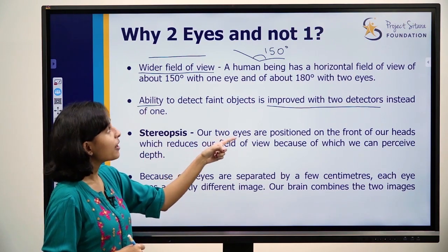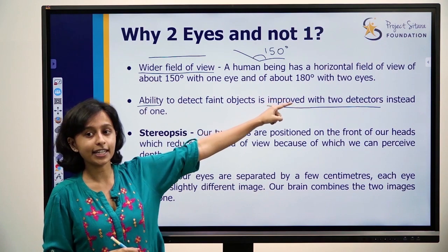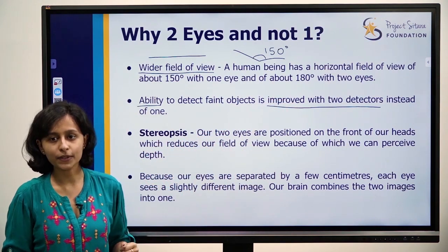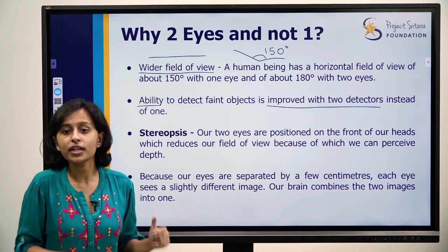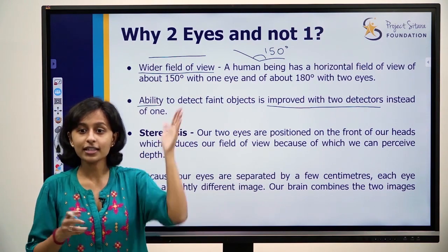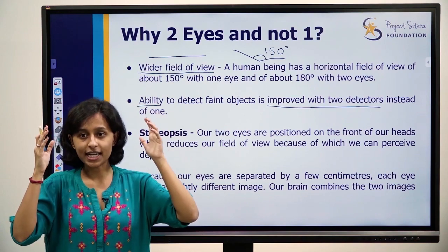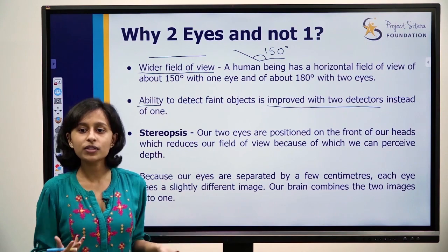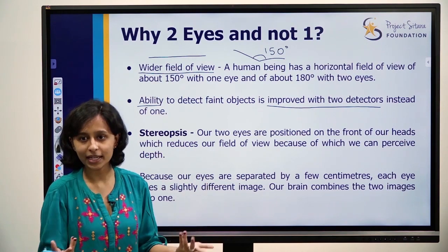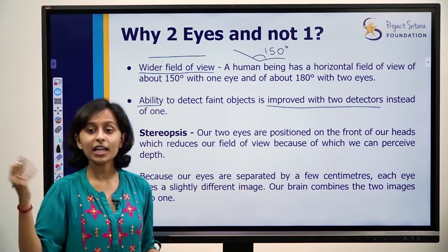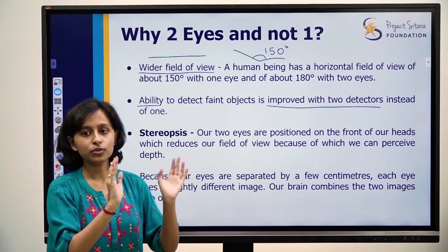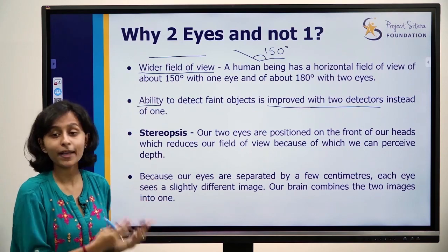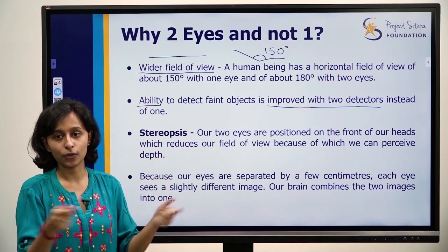The field of view is 180 degrees for humans. For example, it is an animal of prey — a wild animal, a predator animal. It is an animal of prey.